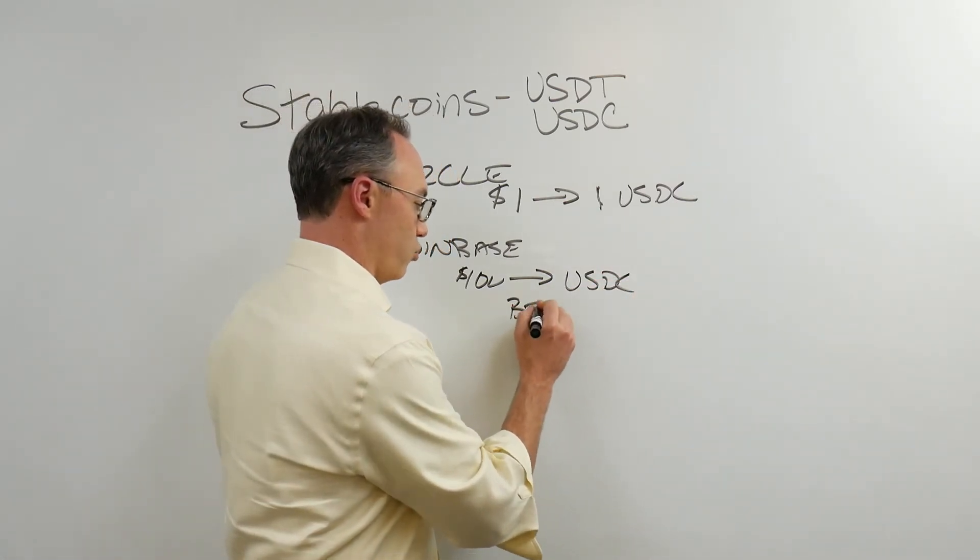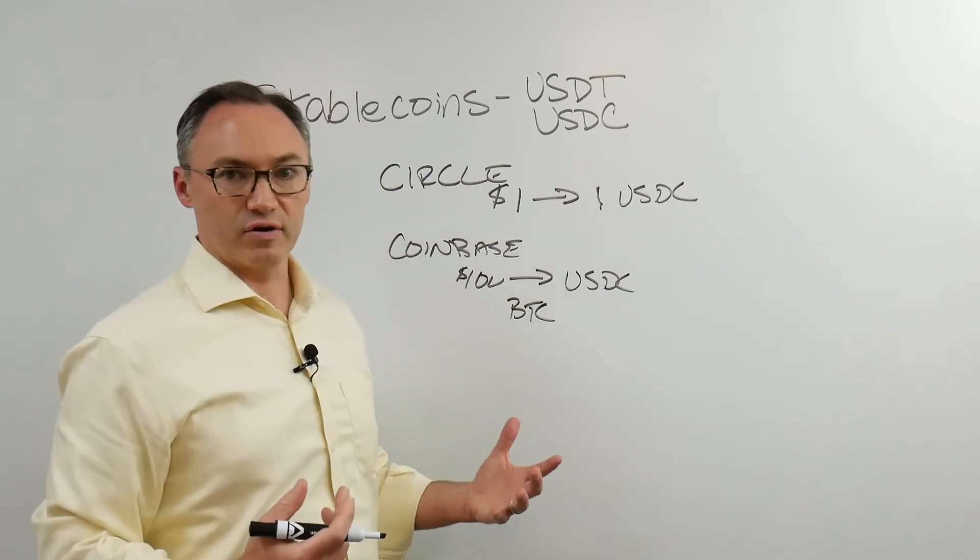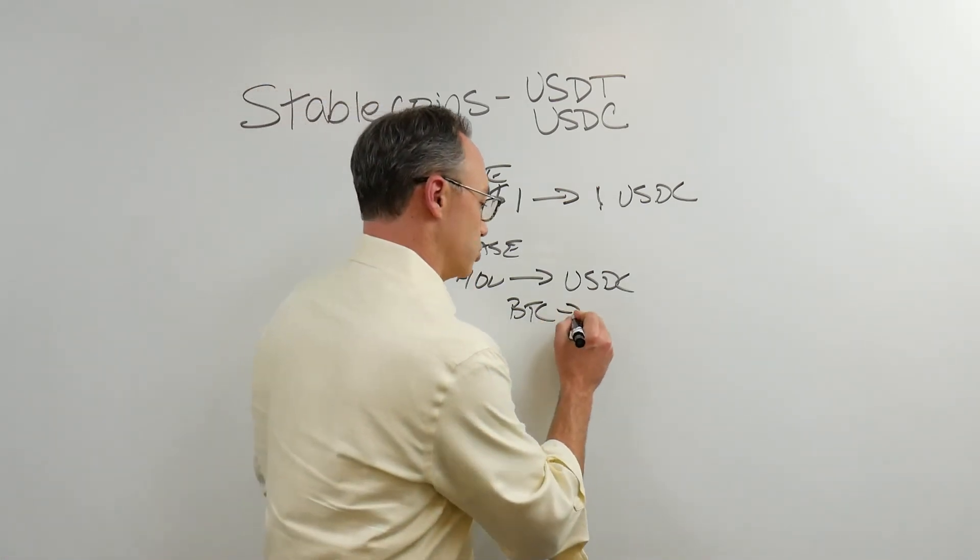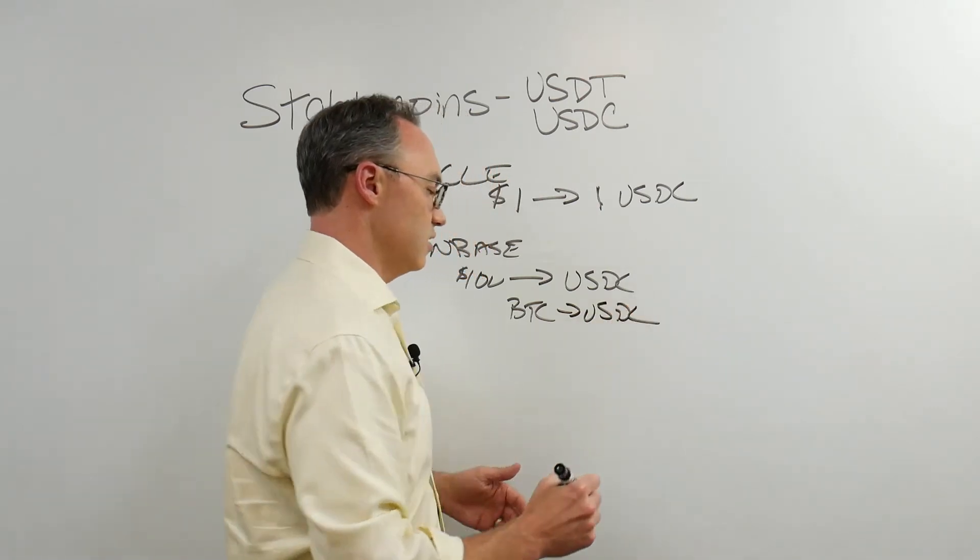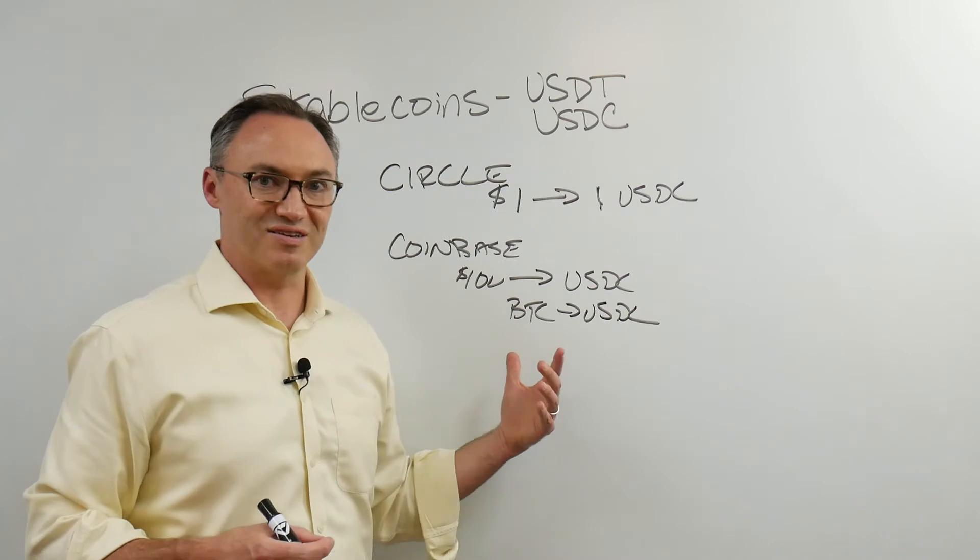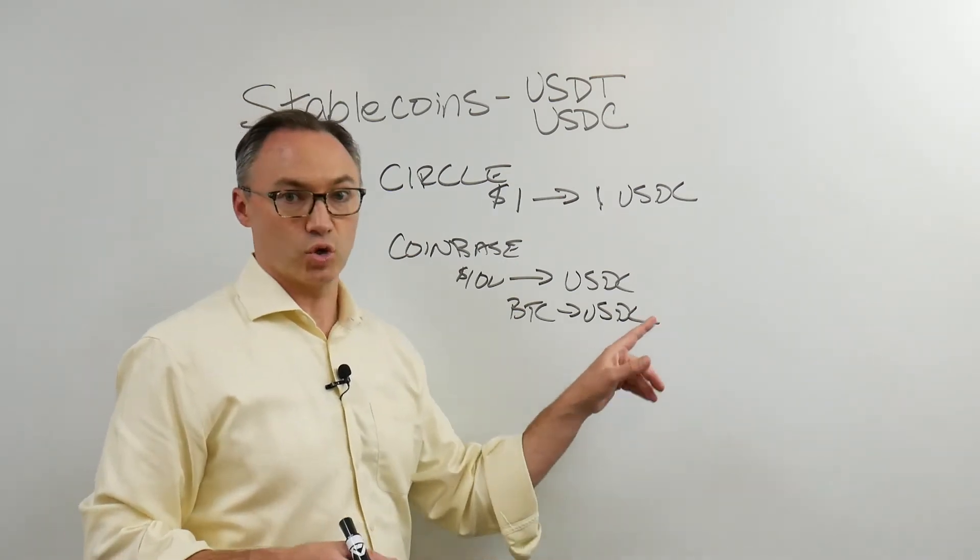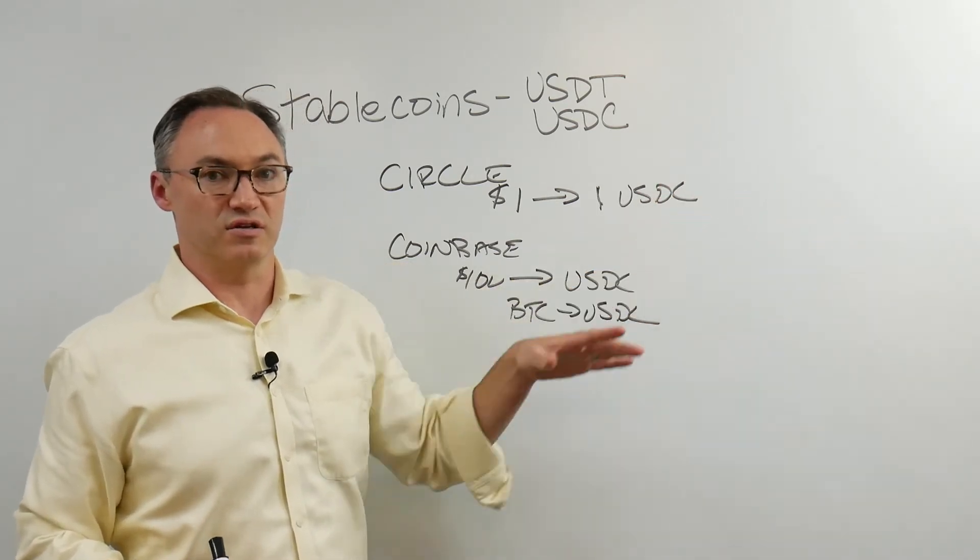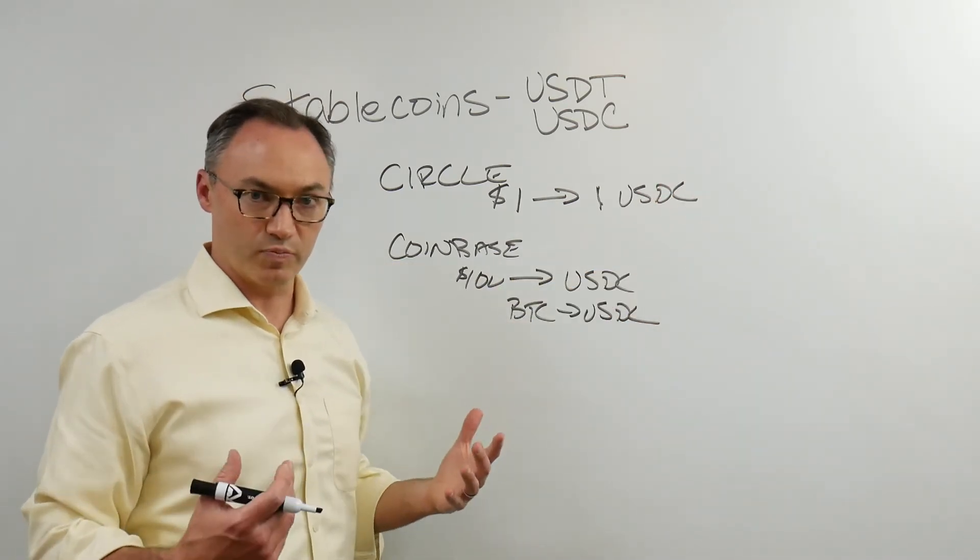If I buy a hundred dollars worth of Bitcoin, and it's sitting there at Coinbase, and I decide I want to get out of this, I think Bitcoin's run up, I can transfer to USDC, and I don't have to put this back in my bank account. I'm not converting it to dollars. I'm converting it to this coin. Now I can send this coin outside of Coinbase. I can send it off the exchange. I can send it to another wallet. I can send it to a crypto wallet.